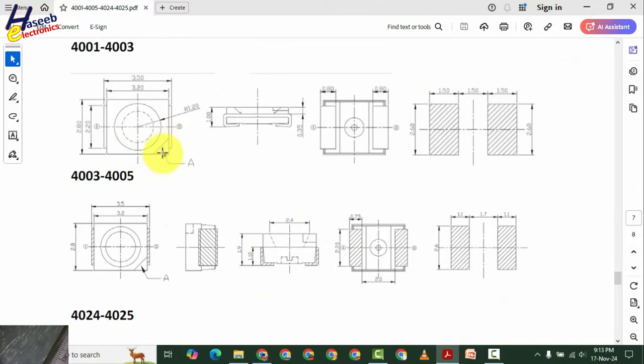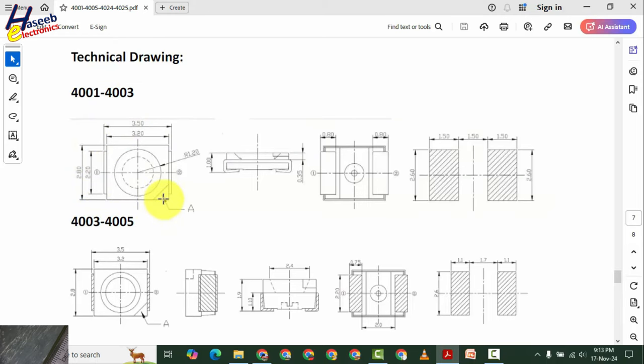And this is its physical size. Cut side. This is pin number 1 and this is pin number 2. In this side, 2835. 3.5 mm by 2.8 mm. This cut side is anode marking.